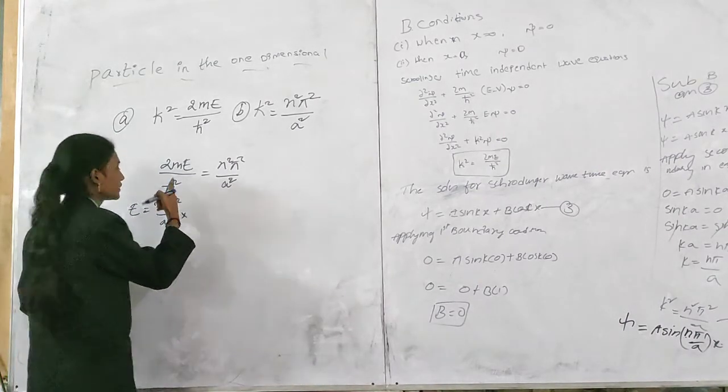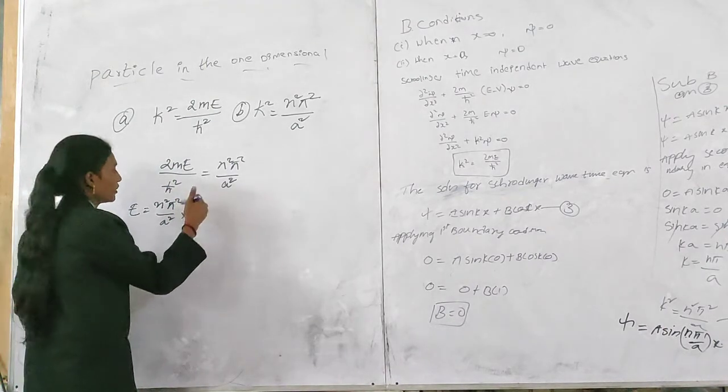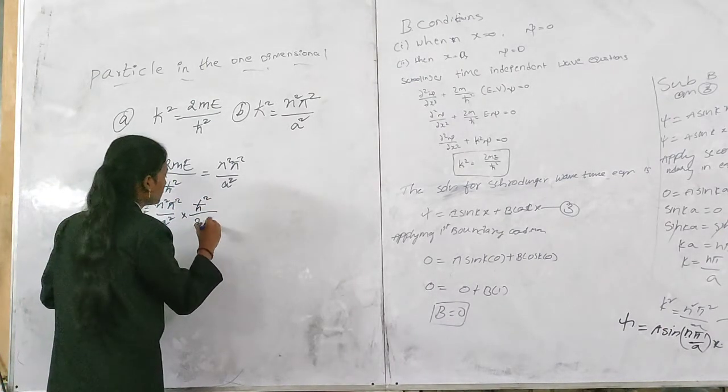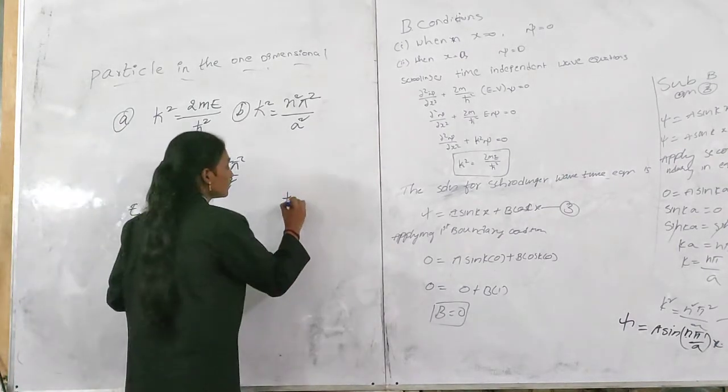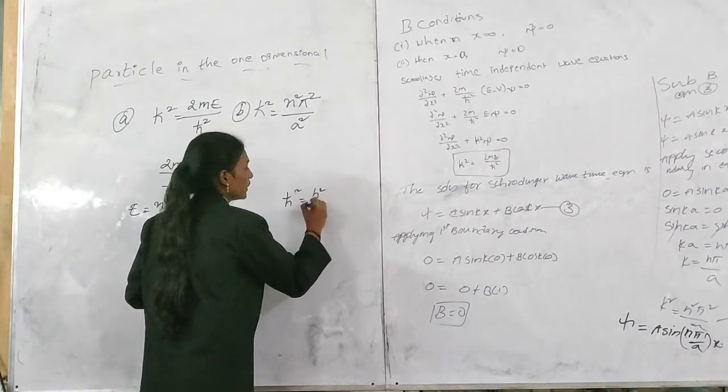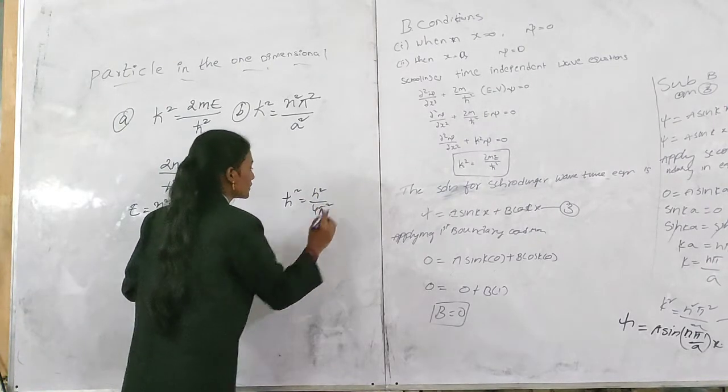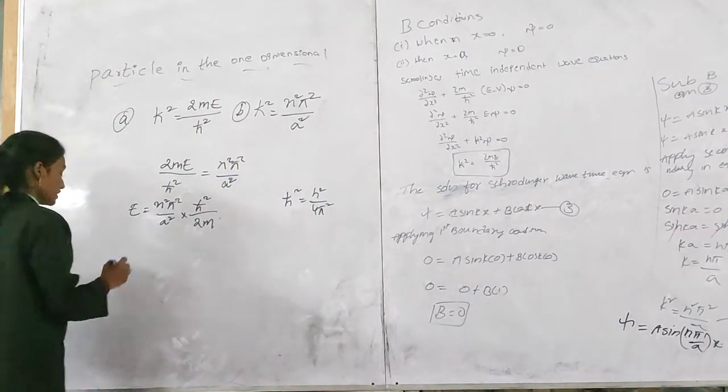Now this is h bar squared over 2m squared. So we know h bar squared value is h squared by 4 phi squared. So we substitute h bar squared value in this equation.